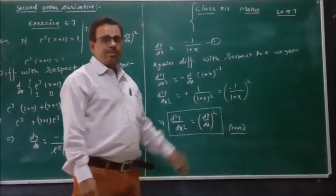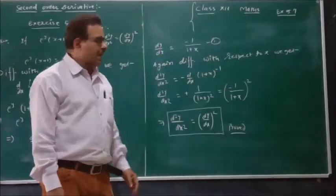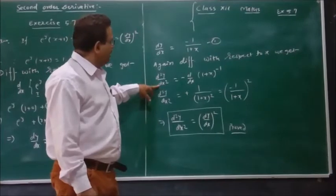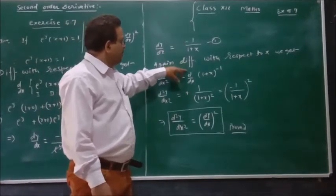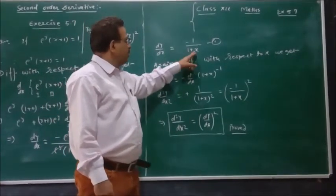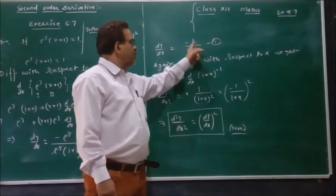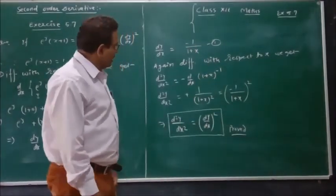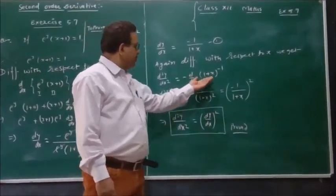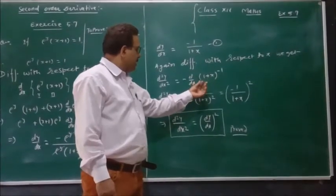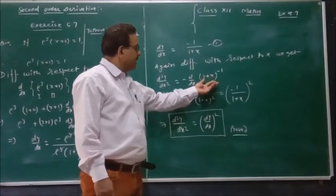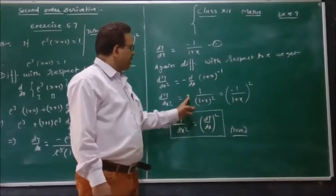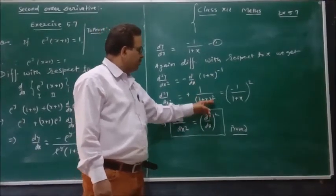Again differentiating with respect to x, we get d squared y divided by dx squared is equal to minus d by dx of 1 plus x to the power minus 1. So the result is minus 1 plus p divided by 1 plus x to the minus 2, which equals minus 1 divided by 1 plus x squared.